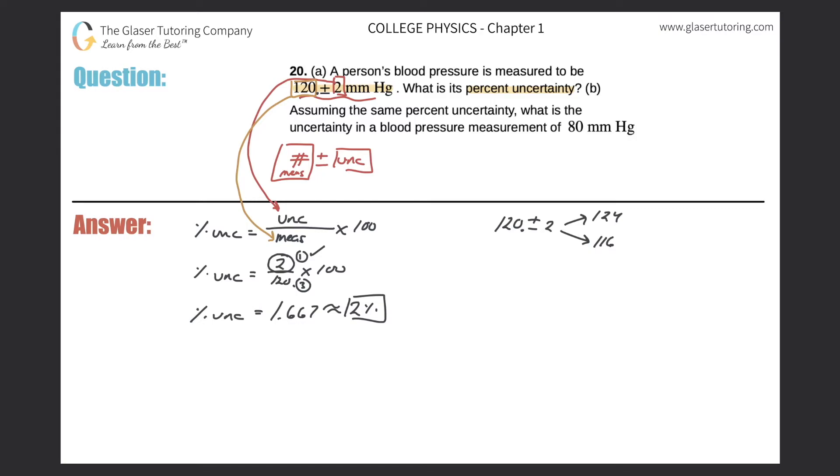Let's move on now to letter B. So it says, assuming the same percent uncertainty, what is the uncertainty in a blood pressure measurement of 80 millimeters of mercury? Okay, so let me just label this as part A. Let me change the color now. I'm going to do part B. So we'll write the formula out again. So the percent uncertainty is equal to the uncertainty associated with the measurement divided by the measurement itself multiplied by 100.